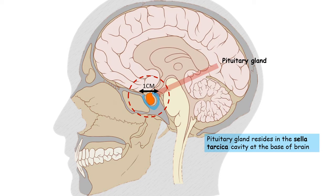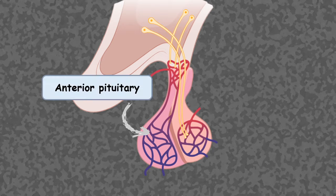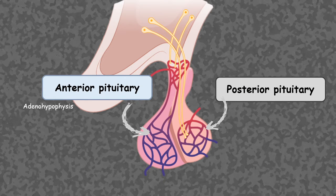The pituitary gland is anatomically divided into two distinct locations: the anterior pituitary, otherwise known as adenohypophysis, and the posterior pituitary, otherwise known as neurohypophysis.